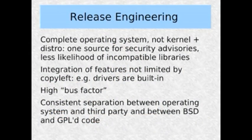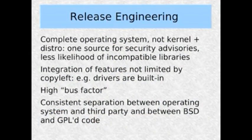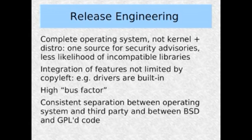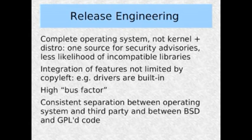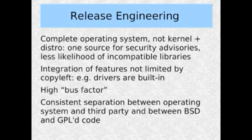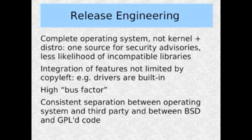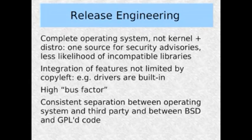Being a complete operating system has several advantages. One is you end up with one release team that handles security advisories, and you also end up with a lower likelihood of incompatible libraries. Because the operating system and the userland are all compiled at the same time, they find out very quickly if there are any incompatibilities.